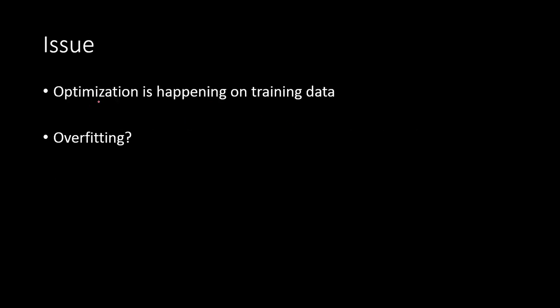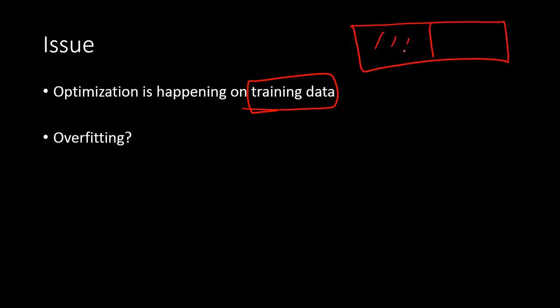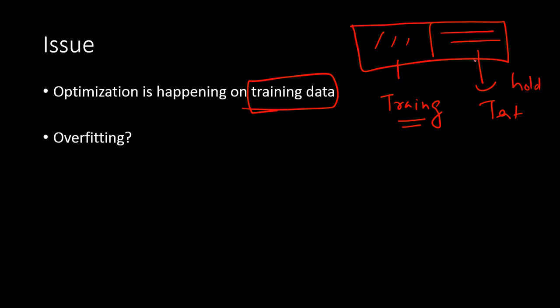The issue we often face is that we always optimize the cost function on the training data. When building a model using machine learning, you divide the sample into two groups: training data and test data, also known as the holdout sample. You do not show the holdout or test data to the model or the optimization algorithm. This causes a problem known as overfitting — the model fits well on training data but may not fit well on test data.